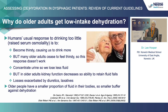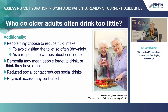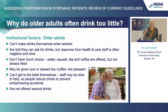On top of that, diuretics and laxatives may exacerbate losses, and a smaller proportion of our body is fluid in older adults, so we have less of a buffer against dehydration. Additionally, people may choose to reduce their fluid intake, often because they want to avoid visiting the toilet and as a response to worries about continence. Dementia may mean that people forget to drink or think they have drunk when they haven't. Reduced social contact reduces social drinking, which is really important both to keep people socially connected but also to keep them hydrated. And physical access may be limited in a variety of different ways as we get frailer.